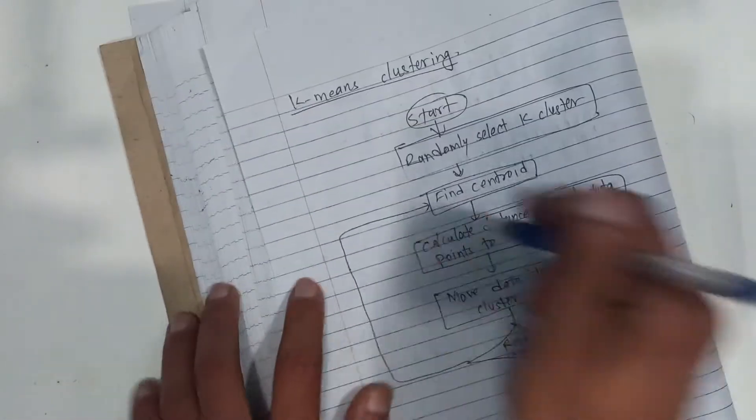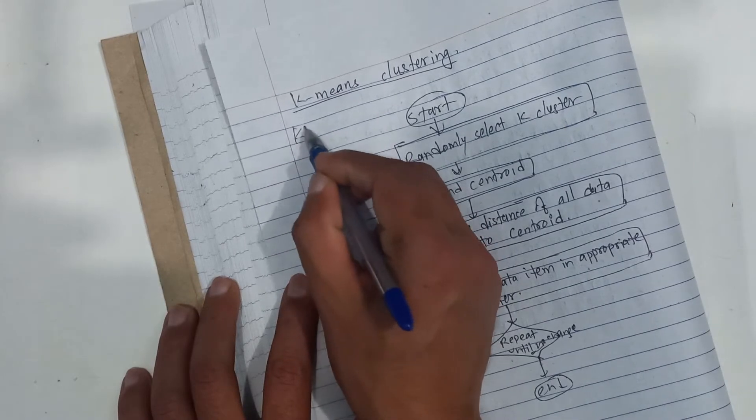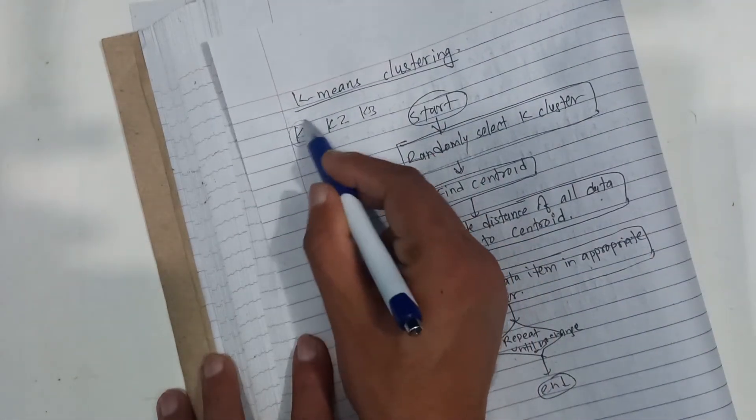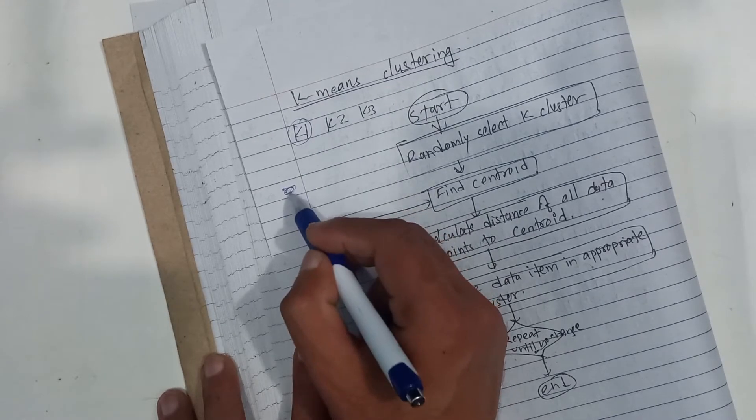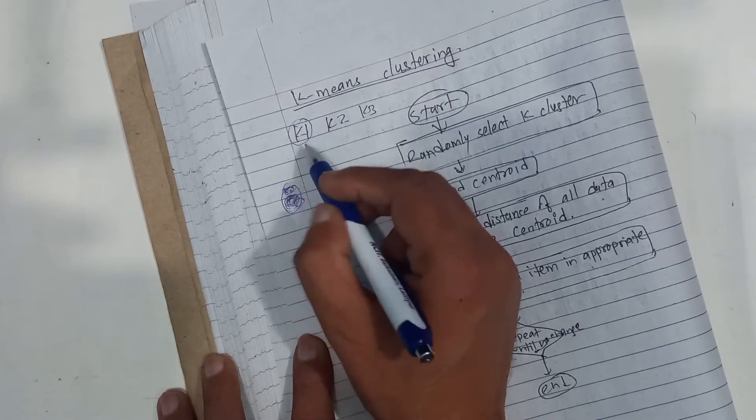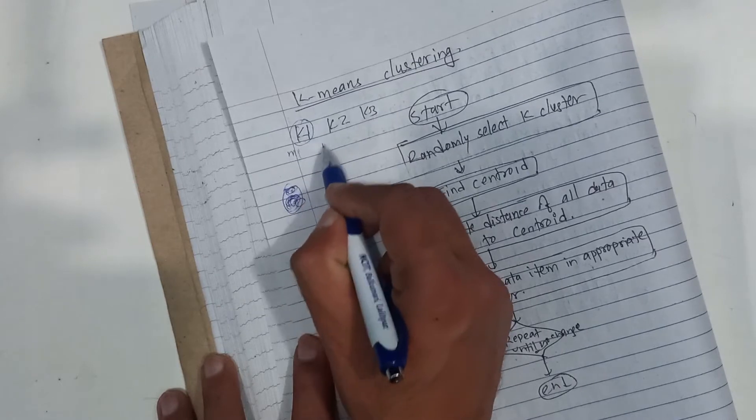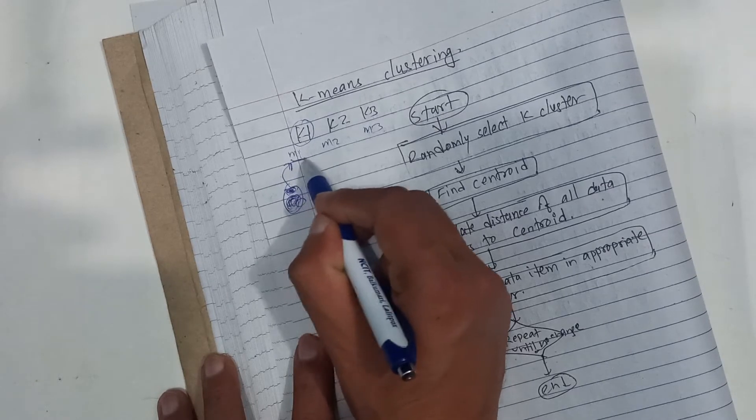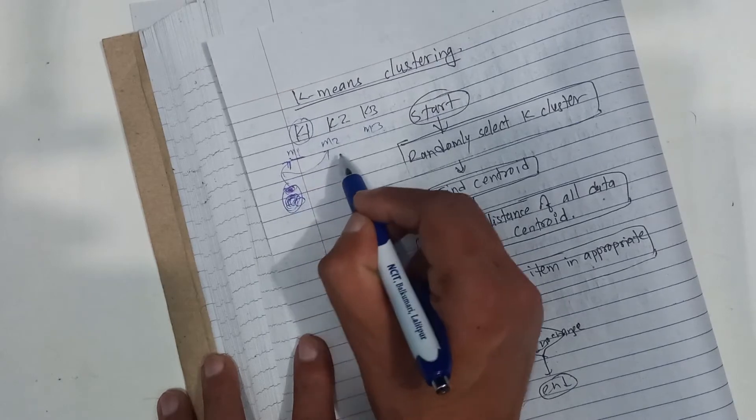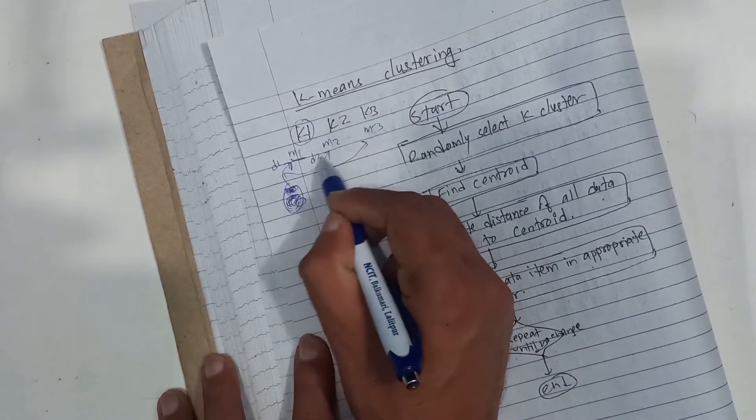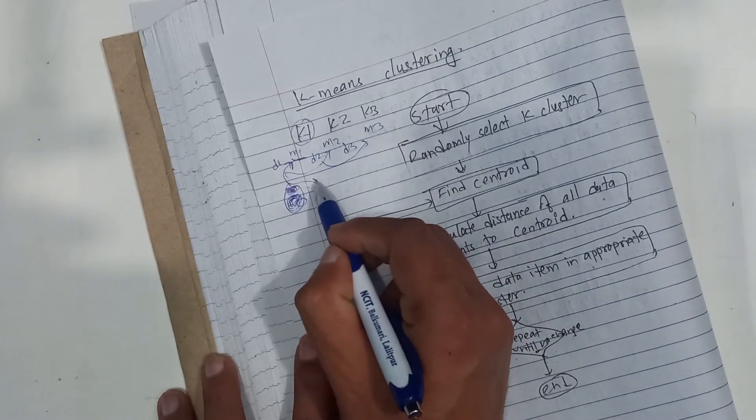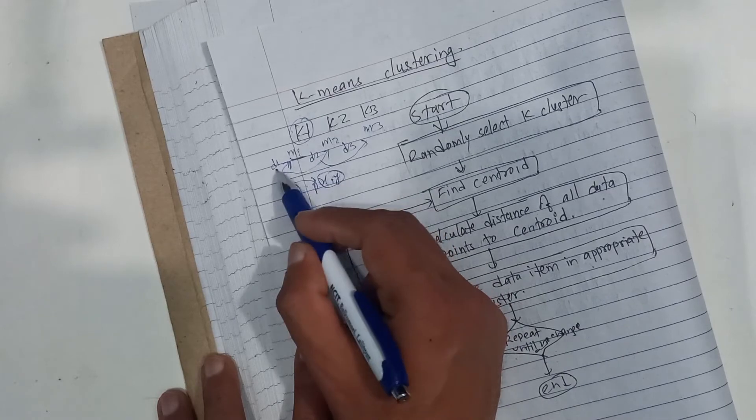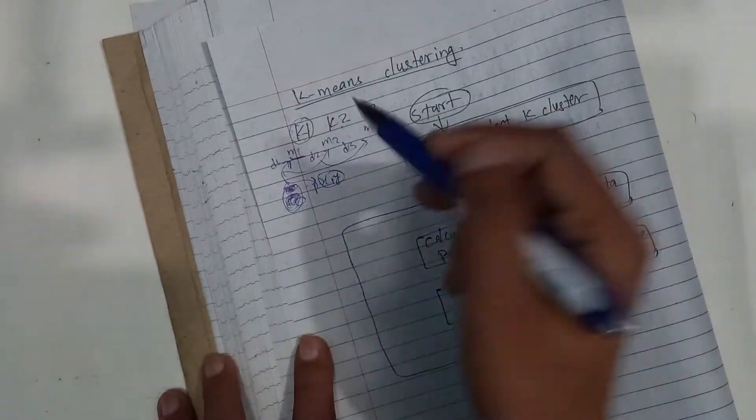Now what we do is, for all the data, we calculate initial centroid values. For each point, we calculate the distance to centroid one, centroid two, centroid three. For each point P, we calculate distances d1, d2, d3.